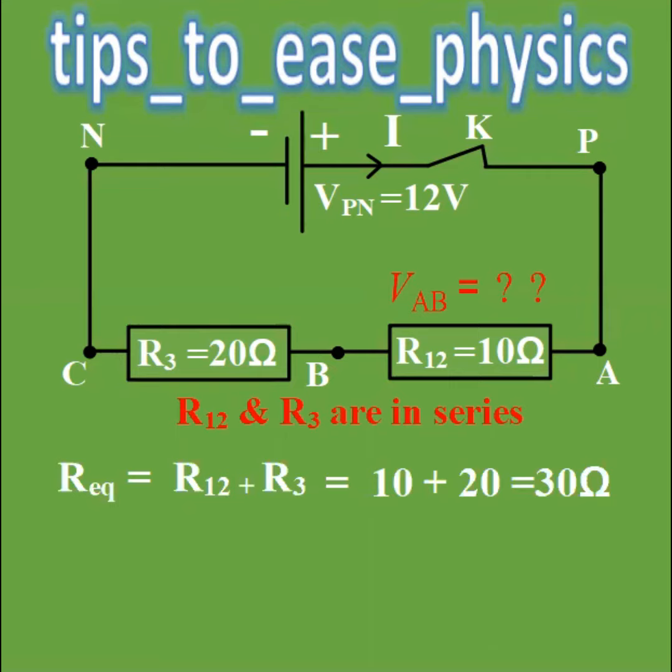10 plus 20 which is equal to 30 ohms. Now we are ready to calculate the potential difference VAB which is VPN times RAB over R equivalent. So VPN is 12 volt times RAB which is R12 10 ohms over the 30 ohms of the R equivalent and the answer will be 4 volts.